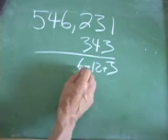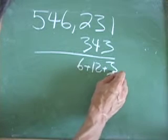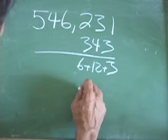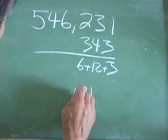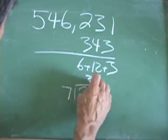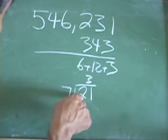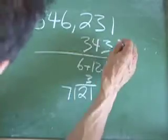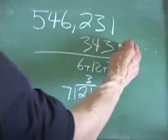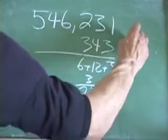Now we add everything up. 6 plus 3 is 9. And 9 and 12 makes 21. 7 goes evenly into 21 three times. So since 7 goes into 21 and you've gone through this method, that means 343 is divisible by 7.